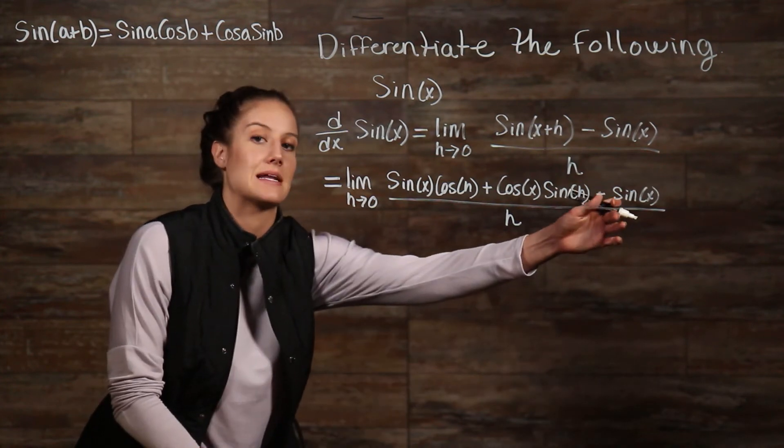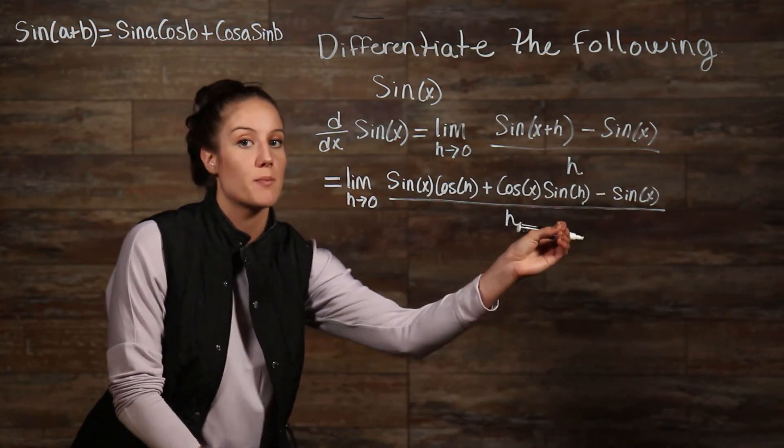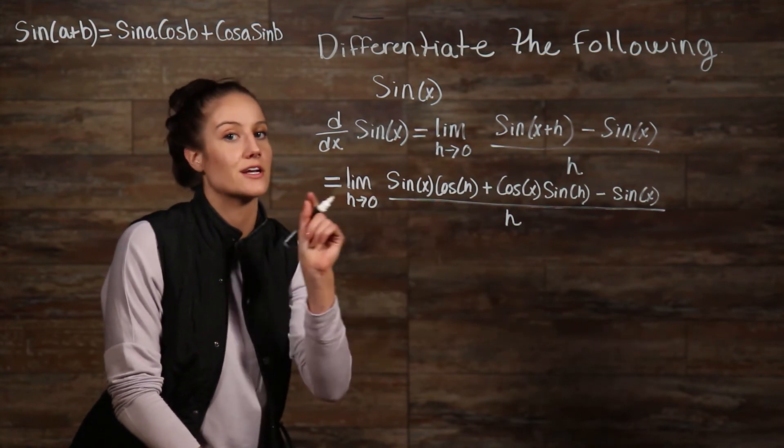Now, because I'm subtracting my negative sine here, it's an associative property. So I'm going to move it over here and group it together, and you'll see why.